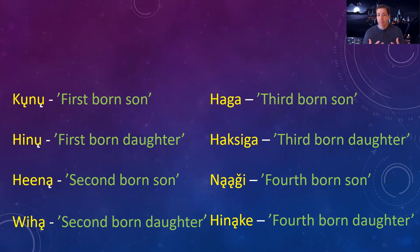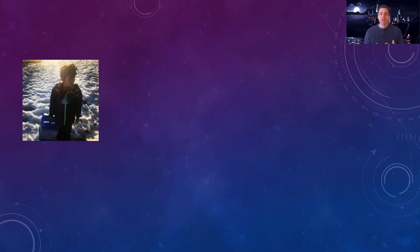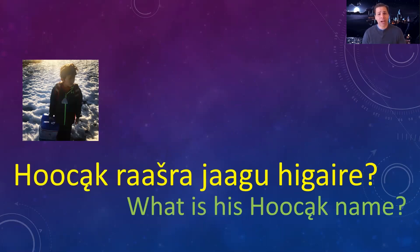I myself am a Hena — considered the most treasured of all the sons, obviously. You can go to Ho-Chunk gatherings, talk to Ho-Chunk people, and you will hear Kunu, Hena, or Hinu. People use that all through their lives, even after they have a given Ho-Chunk name. To give you an example, this is my son, my youngest — he is the third eldest son, which means he would be a Haga. So now we can ask, what is his Ho-Chunk name? Ho-Chunk-Rajra Jagu Higaire. Ho-Chunk-Rajra Ha-Ga-Ga Higaire.